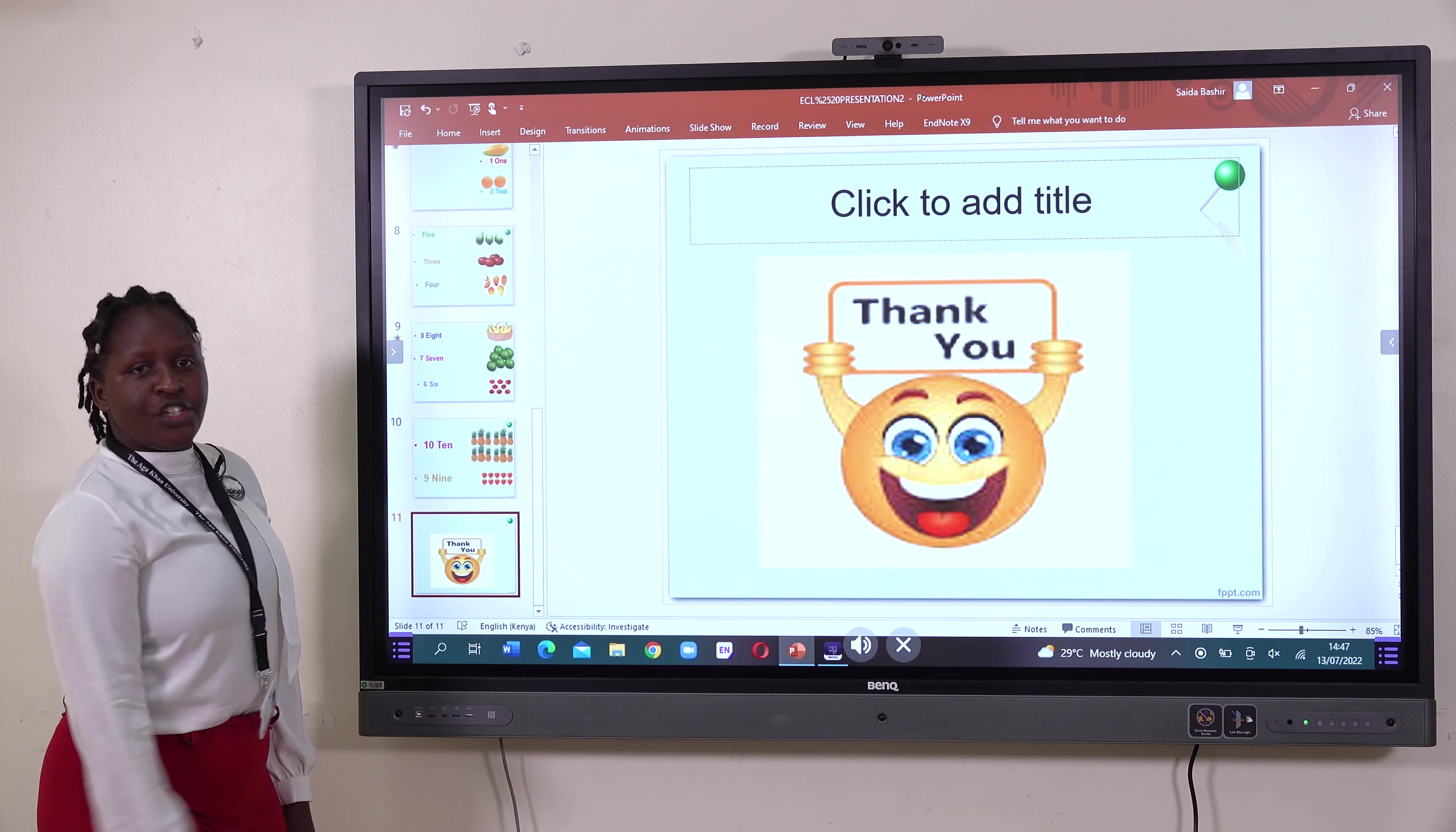Now, we are going to have an activity and we are going to do dragging and dropping as we count. I want us to enjoy the lesson. This is my example. I want to show where my one fruit is. I will click like that, and then I'm going to drag it and drop it there. So that is number one.